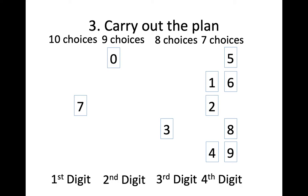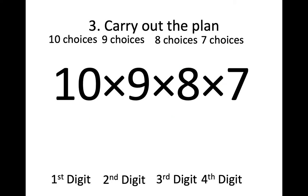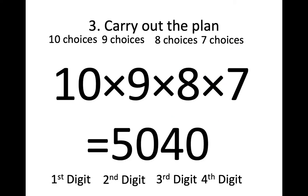So the way I count these all up using the fundamental counting principle — or just remembering how multiplication works — if I've got 10 things, 9 things, 8 things, 7 things, I multiply those together and that gives me 5,040. So 5,040 is the total number of different lock codes I can pick for this situation.